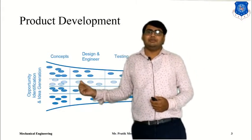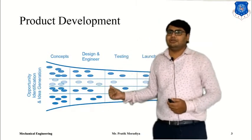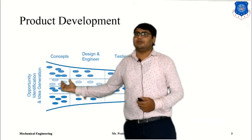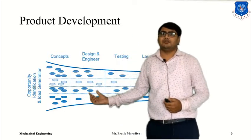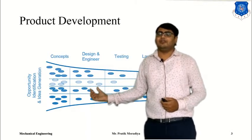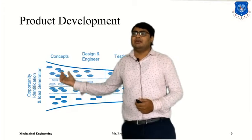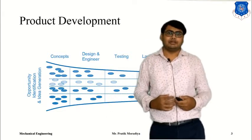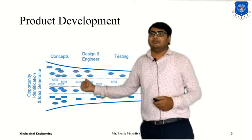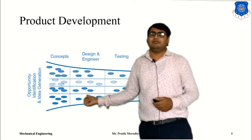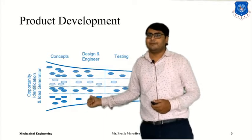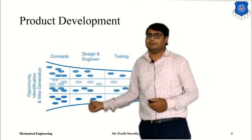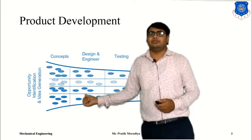So what the design engineer will do is prepare a design. In the design and engineering phase, we take those concepts, screen them, and select the few that are viable. We develop on those selected concepts and think about how each concept can actually work. After design and engineering is done, we have a number of concepts for which we have designed some prototypes. In the testing phase, we identify better designs.